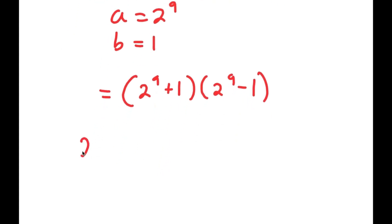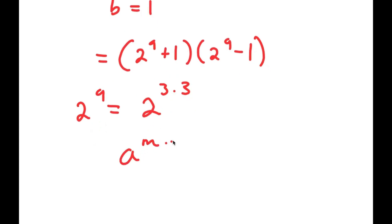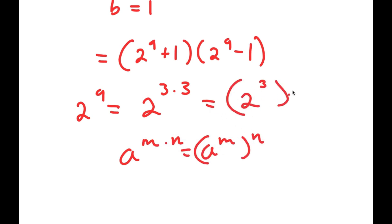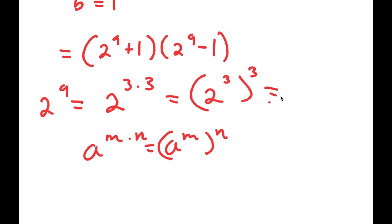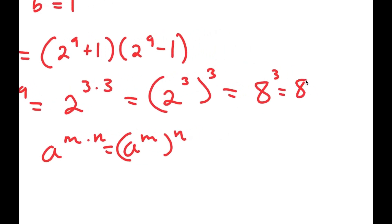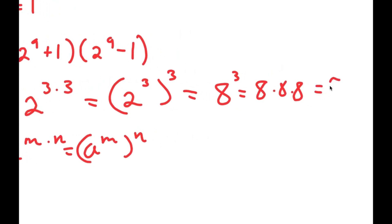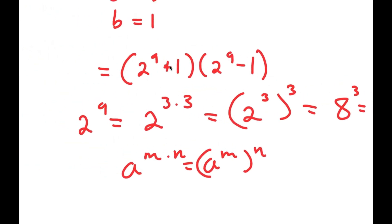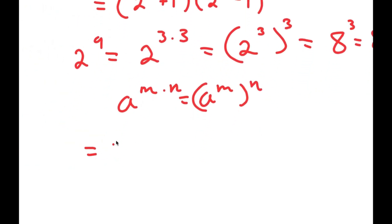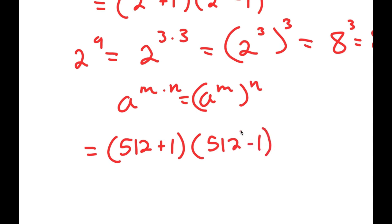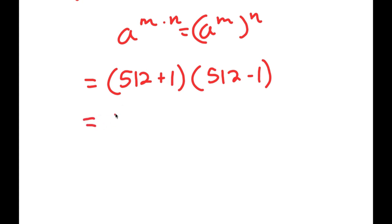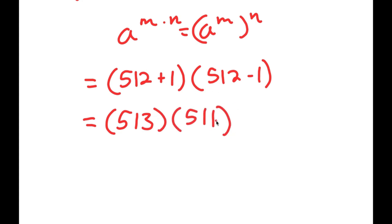What is 2 to the power of 9? Well, 2^9 equals 2^(3 times 3), and using the property a^(m×n) = (a^m)^n, this is (2^3)^3. Since 2^3 is 8, this equals 8^3, which is 8 times 8 times 8, equal to 512. So 2 to the power of 9 is 512. Now I get (512 + 1) times (512 − 1), which is 513 times 511.